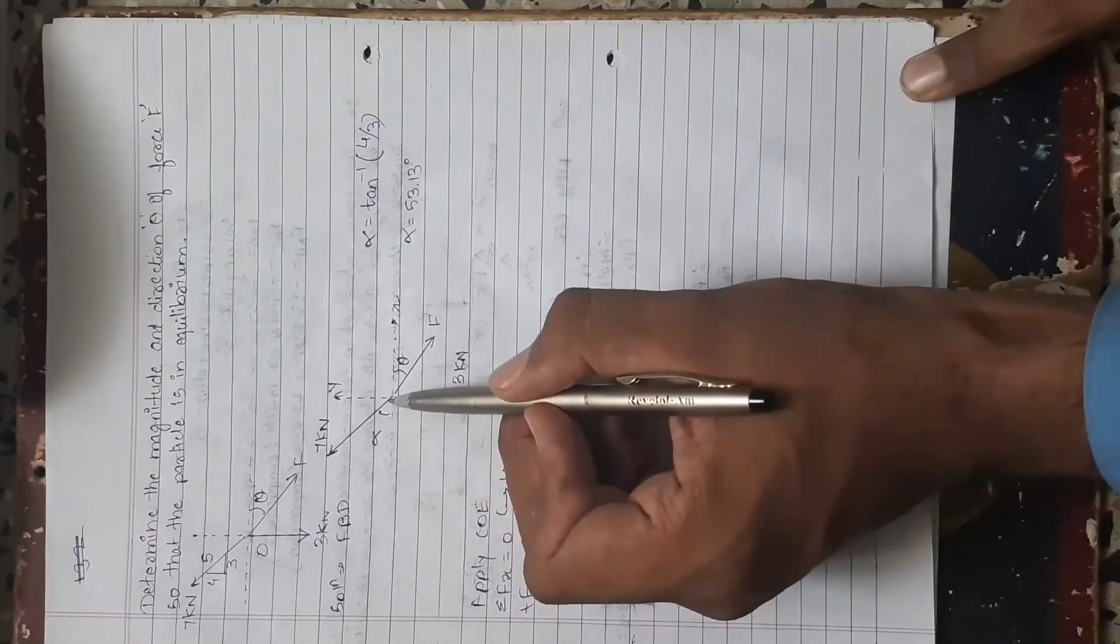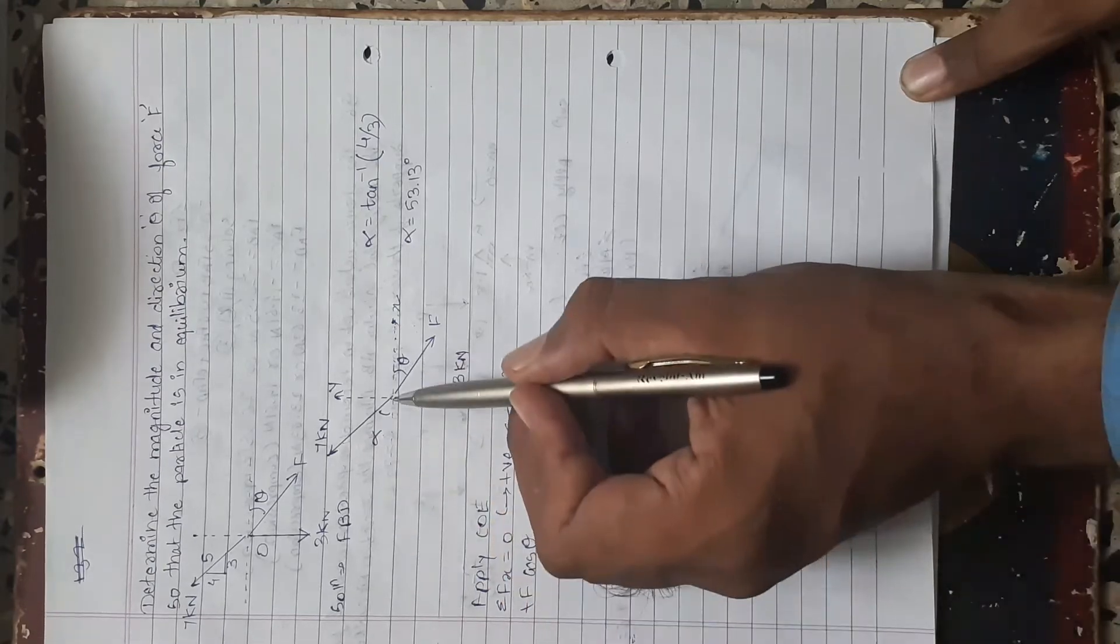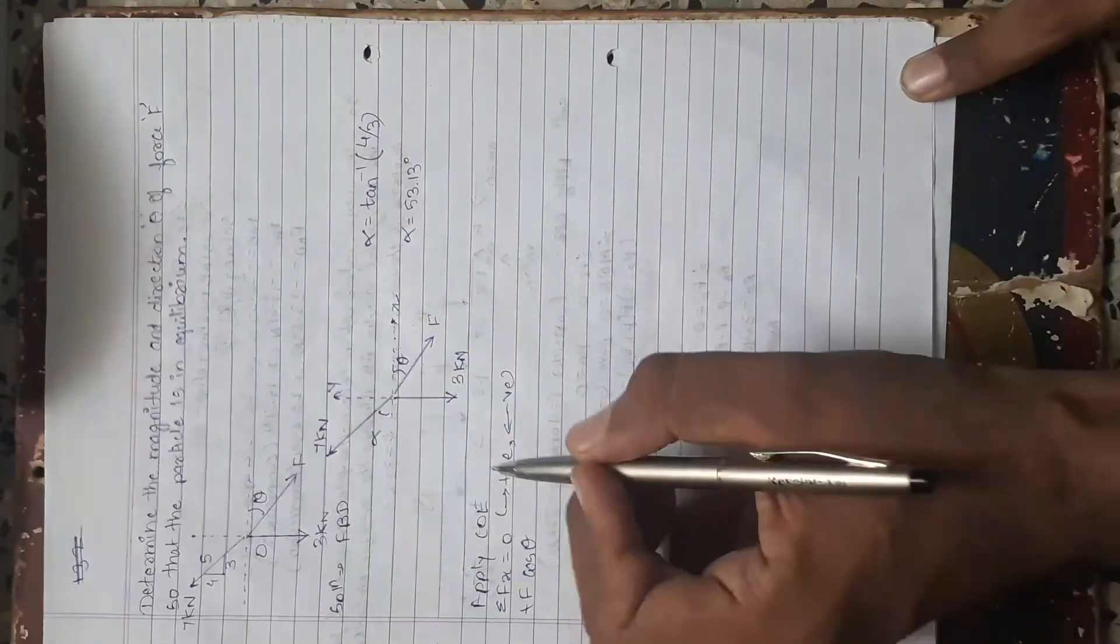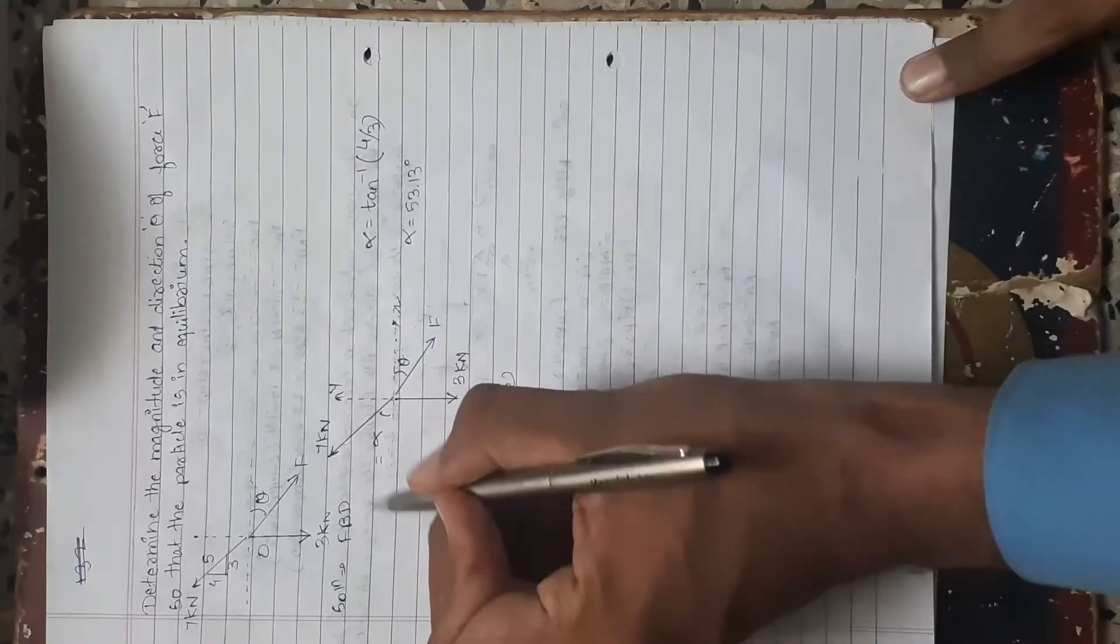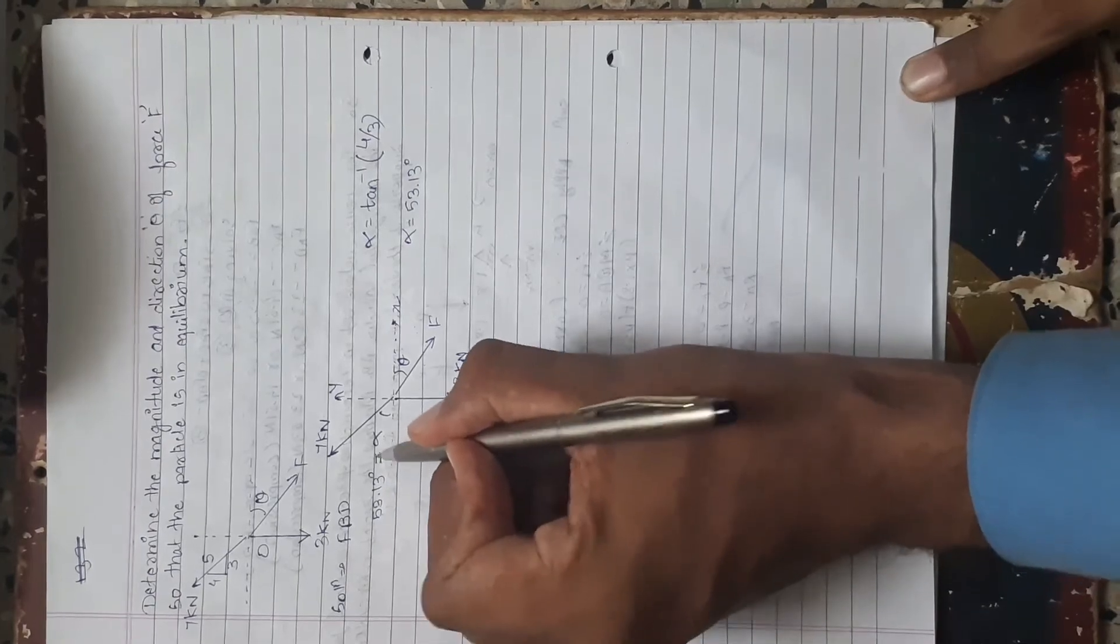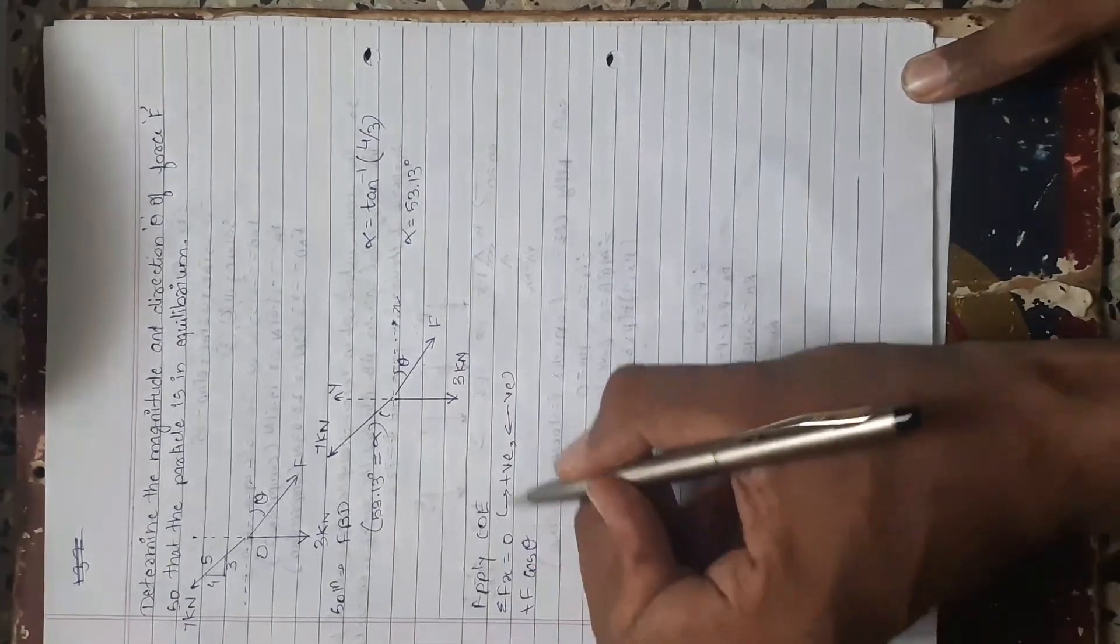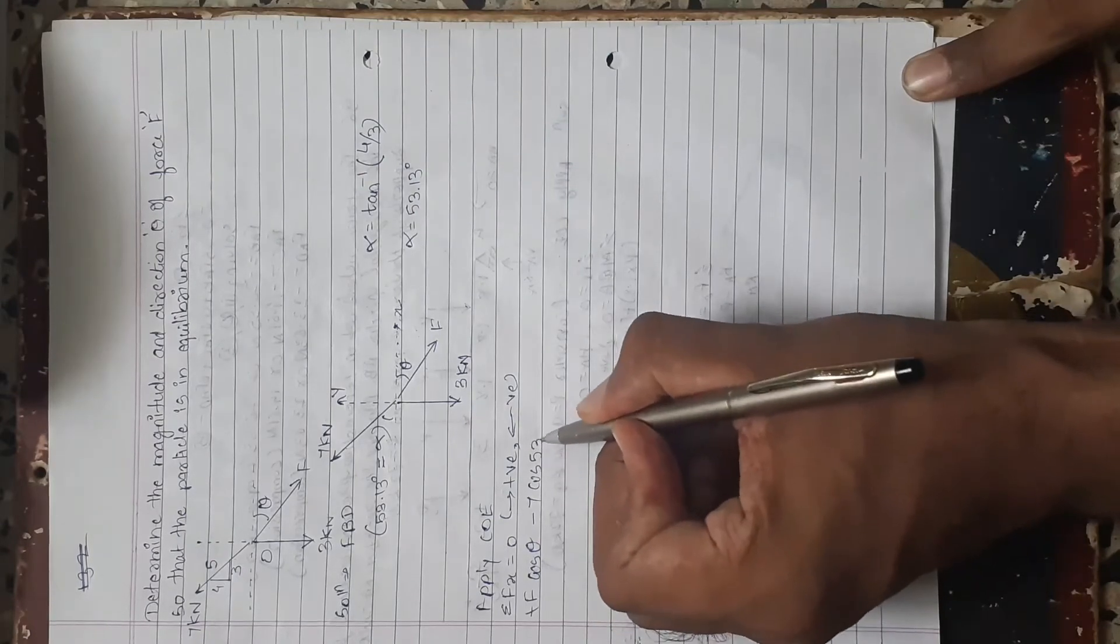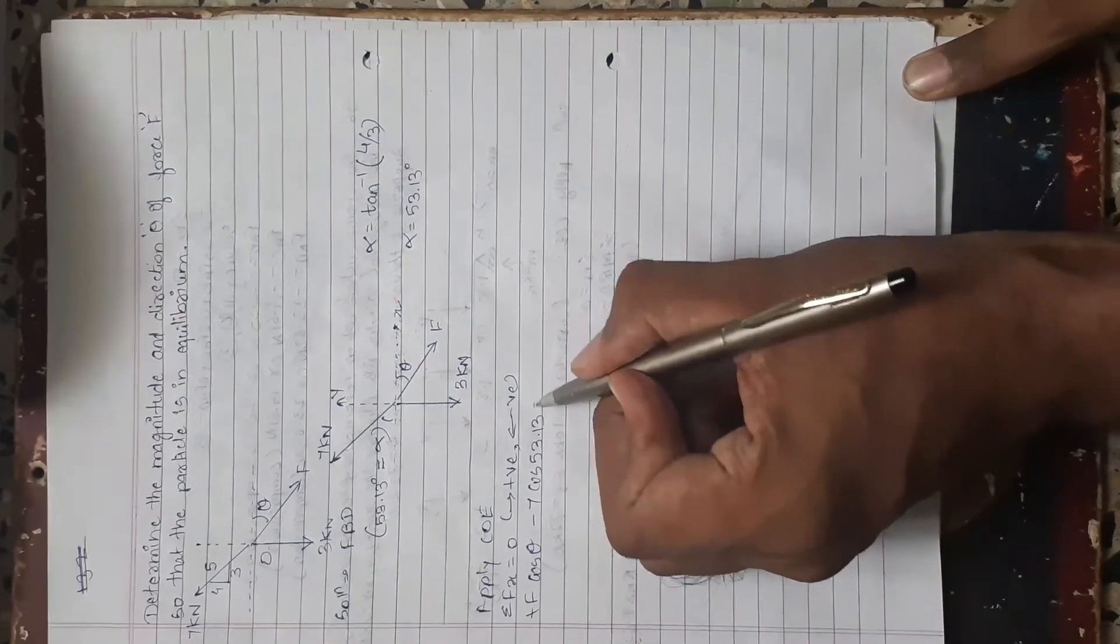Then 7 cos alpha which goes towards left, and value of alpha is 53.13 degrees. So we will now take, here I will write down alpha is equal to 53.13 degrees. So it is minus 7 cos 53.13 degrees equal to 0.